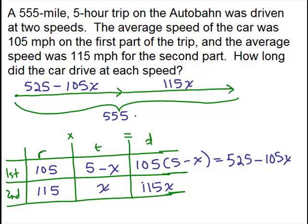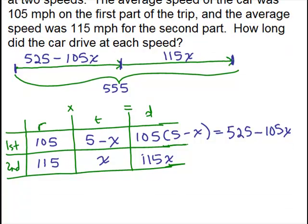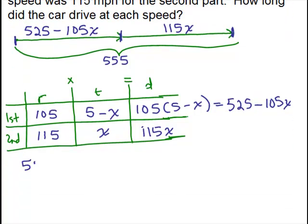So then you look at the picture. That helps you draw, write the equation. So we know that this amount plus this amount should equal that total of 555. And that's our equation. So we have 525 minus 105X plus 115X equals 555.